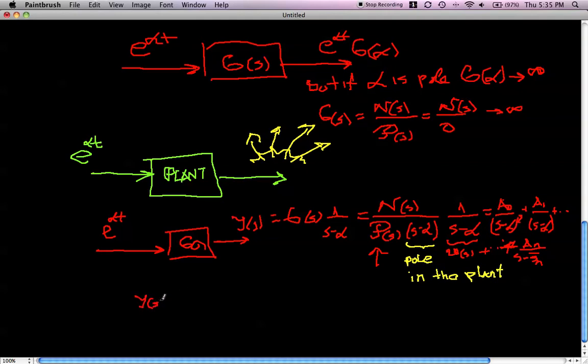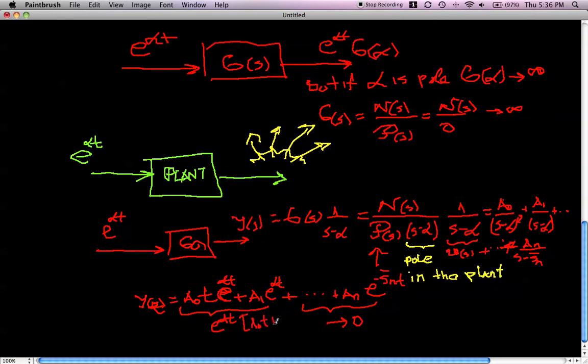We immediately see that y over s, given in this form, actually let's write y over t, is going to be just a0 t e to the alpha t, exponential e to the alpha t, plus a1 e to the alpha t, plus all others, which are associated with the roots of the p of s: an which is e to the minus sn t. Again, we see that all these other terms, they go to 0, and our plant is following e to the alpha t, because if we factor this outside, we will just have e to the alpha t times a0 t plus a1.